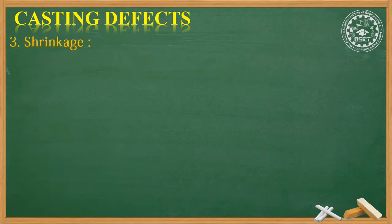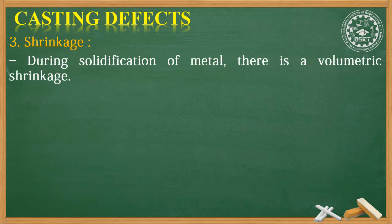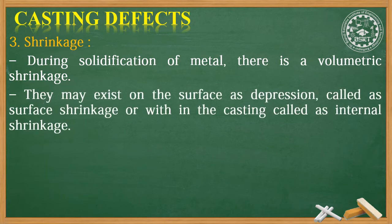The third defect is shrinkage. During solidification of metal, there is a volumetric shrinkage. They may exist on the surface as a depression called surface shrinkage, or within the casting, called internal shrinkage.